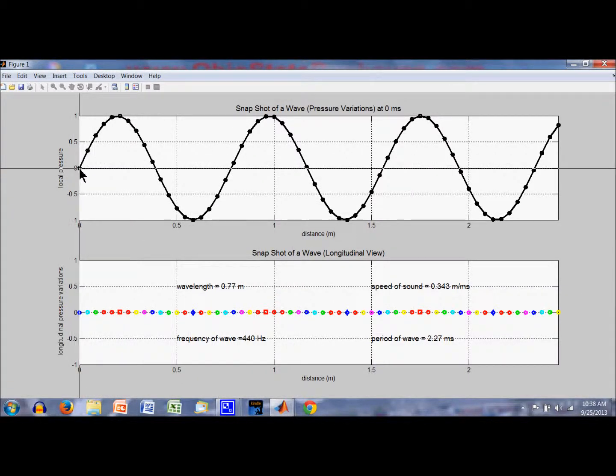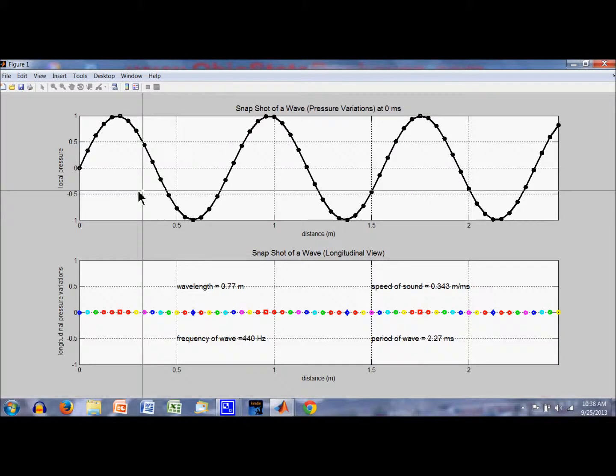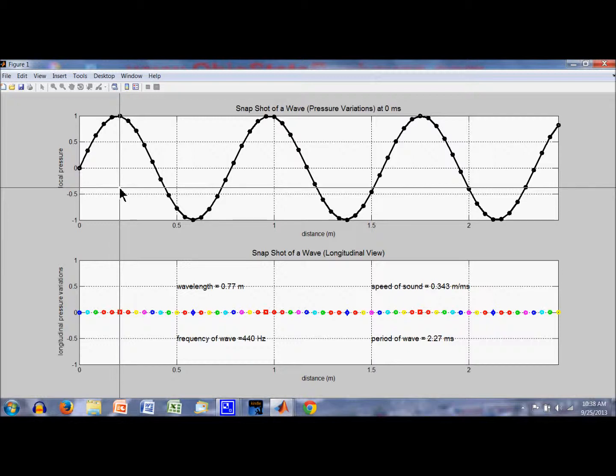We start out here. We start out at this point. We move across until it repeats, which is about 0.77 meters away. We're going to use the lines here to denote pressure point, or a compression point, and watch it propagate across the screen.